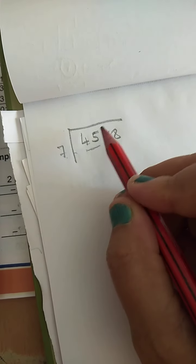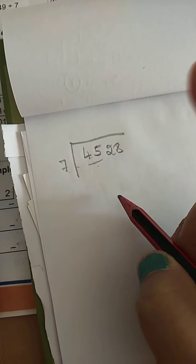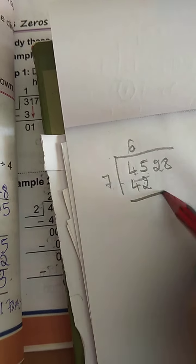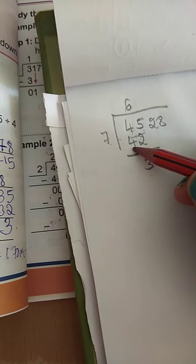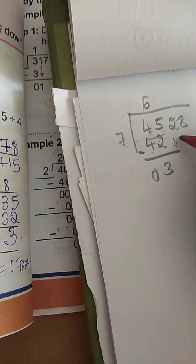So 7 times what is 45? In 7 tables, 45 is not there. 7 times 6 is 42. 7 times 6 is smaller number. 7 times 6 is 42. So 45 minus 42. 5 minus 2 is 3. 4 minus 4 is 0. Always you have to subtract.